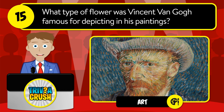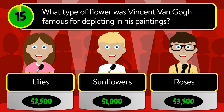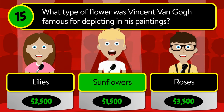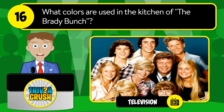Question number fifteen: what type of flower was Vincent van Gogh so famous for depicting in his paintings? Was it lilies, sunflowers, or roses? The correct answer is sunflowers.